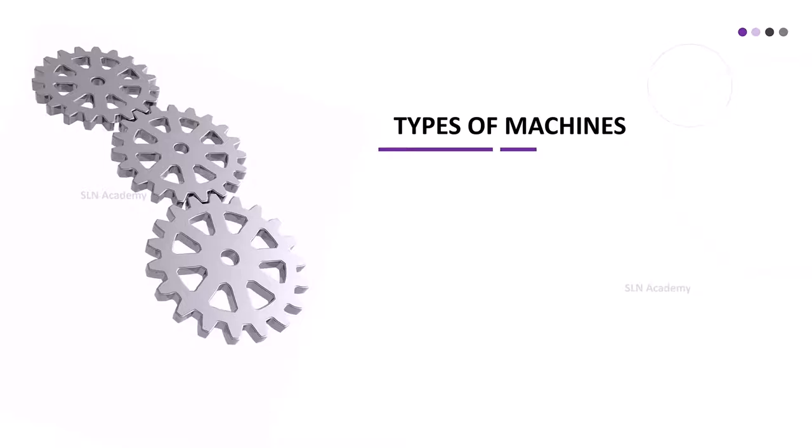Types of Machines. Machines are mainly of two types. They are simple machines and complex machines. Machines can be as simple as a pair of tongs, or scissors, or as complicated as a computer or a tractor.